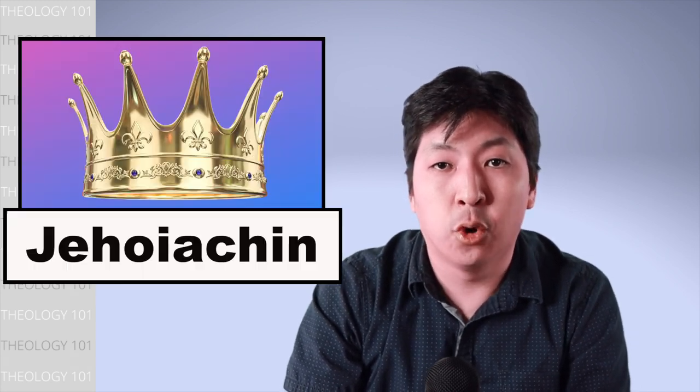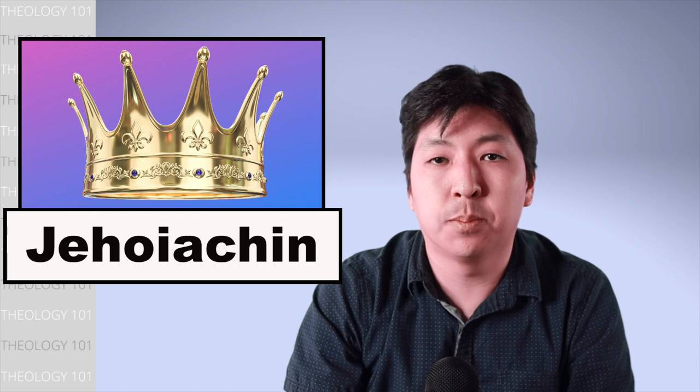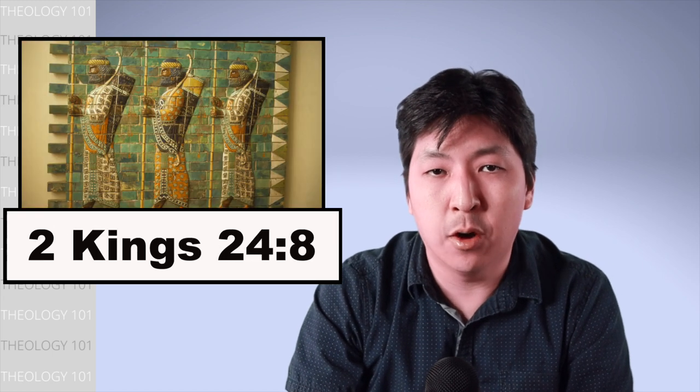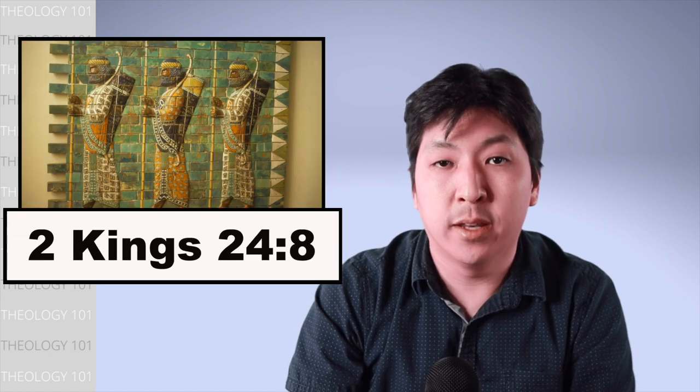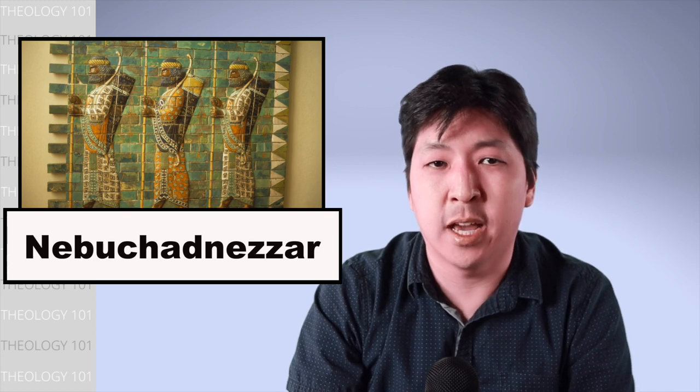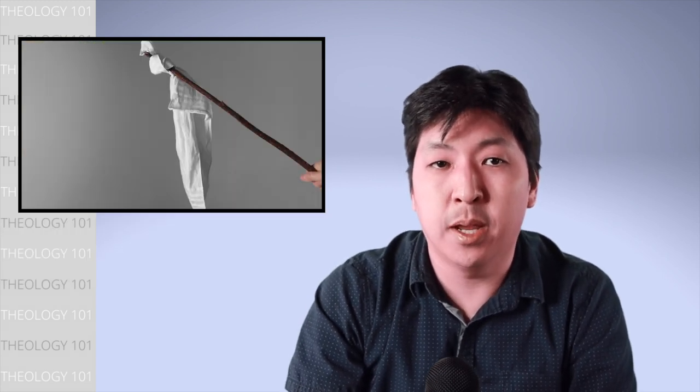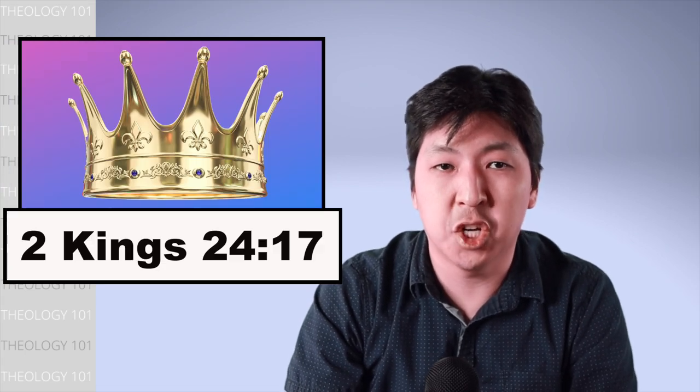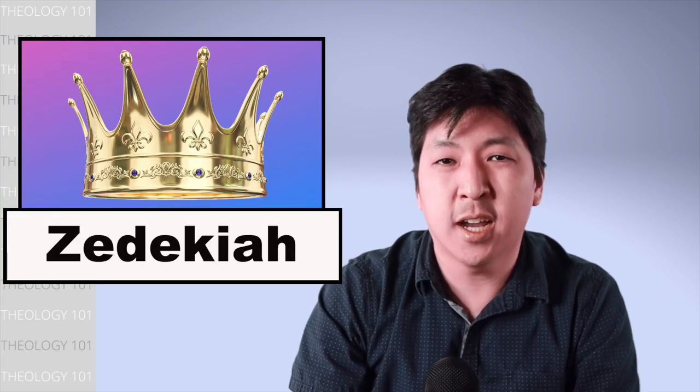Jehoiakim's son, Jehoiachin, became king and ruled for three months before Babylon, the new world power, captured Jerusalem. While Nebuchadnezzar, the king of Babylon, attacked Jerusalem, Jehoiachin surrendered and Nebuchadnezzar made Jehoiachin's uncle king in his place and changed his name to Zedekiah. Zedekiah ruled for eleven years and rebelled against Babylon.